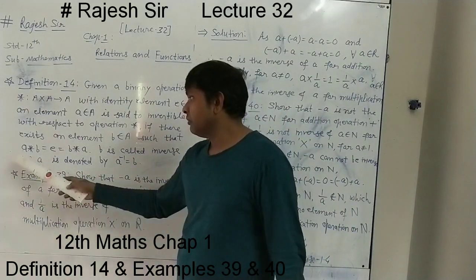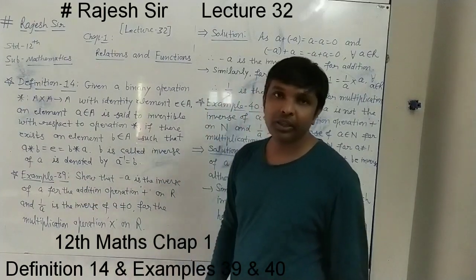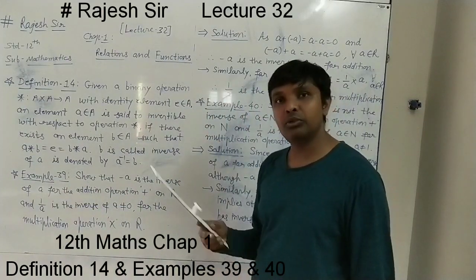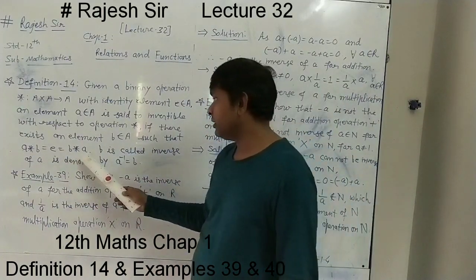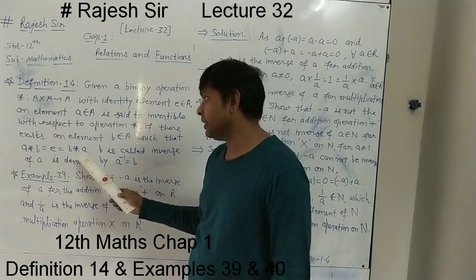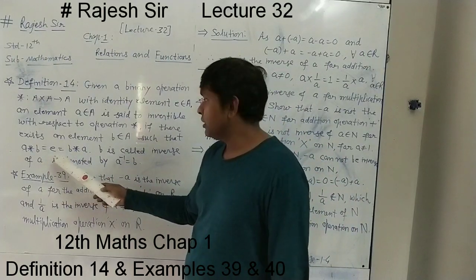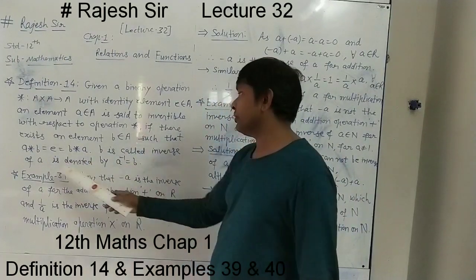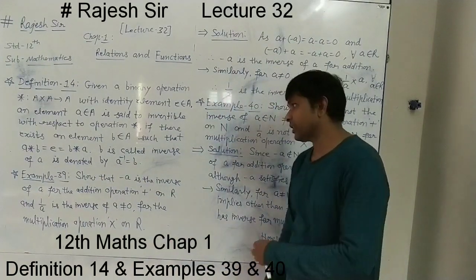When A is invertible, we say: if A binary B equals E and B binary A equals E, then B is called the inverse of A and A inverse equals B.